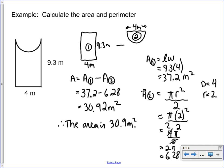Okay, so now we can go ahead and find the perimeter. The perimeter is essentially going to include 9.3 plus 4 plus 9.3. But we're also going to have to find half of the circumference of the circle.